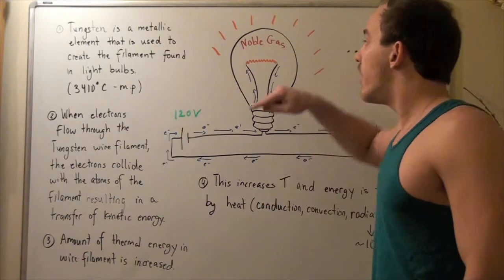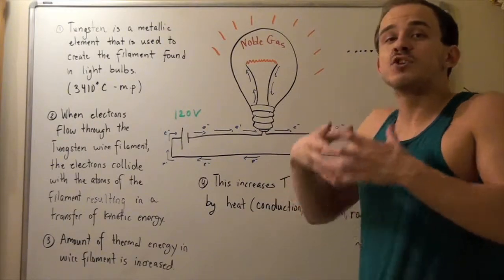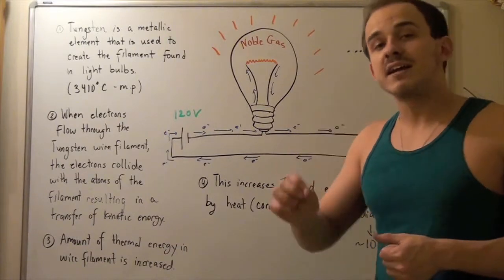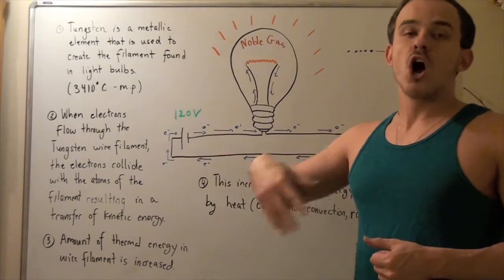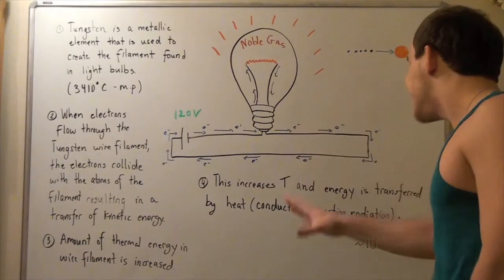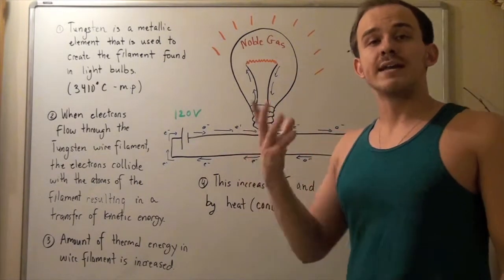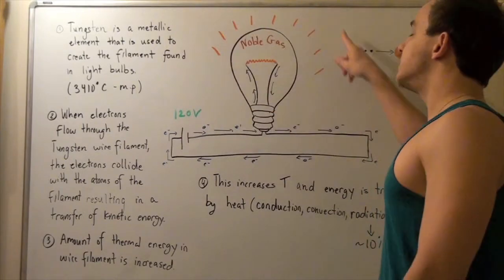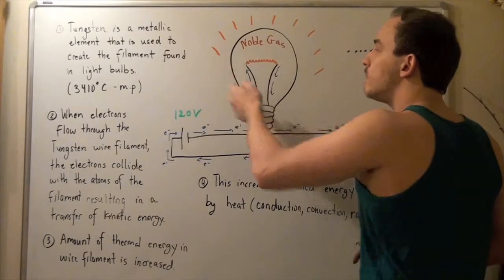When this tungsten filament heats up and temperature increases, there is a transfer of energy in the form of light — that's what we see. Other electromagnetic waves, such as infrared waves, are emitted as well, but those we can't see. About 90% of our energy is transferred in the form of thermal energy; in other words, convection occurs, heating up the outside molecules and the bulb itself, as well as the molecules found inside.